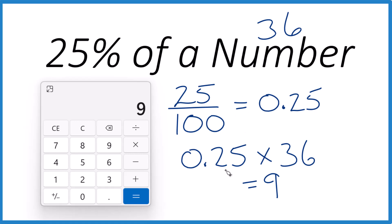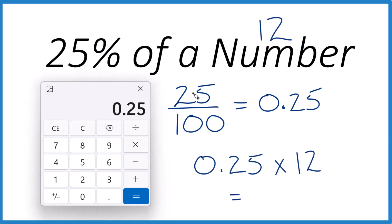Now pause and you try one. How about 12? So we take 25, divide by 100, that changes our percent to a decimal. And we multiply the decimal by the number, 12. 0.25 times 12, that equals 3. So 25% of 12 is 3.